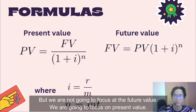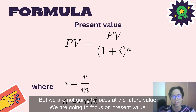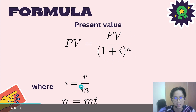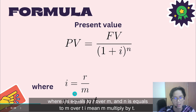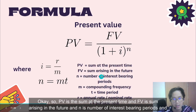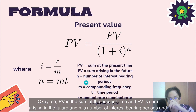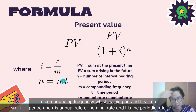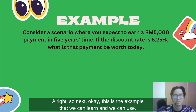Now we're going to learn the formulas. We're going to focus on present value: PV equals FV divided by (1 plus i) to the power of n, where i equals r over m, and n equals m multiplied by t. PV is the sum at the present time, FV is the sum arising in the future, n is the number of interest-bearing periods, m is the compounding frequency, t is the time period, r is the annual or nominal rate, and i is the periodic rate.